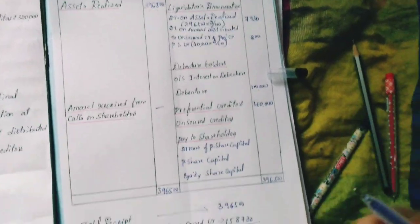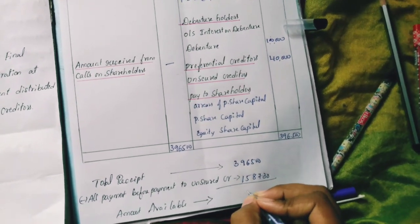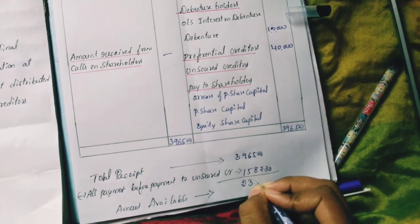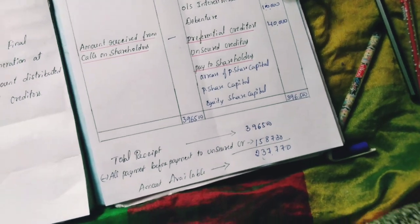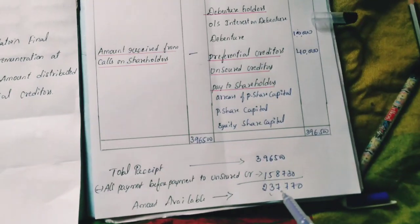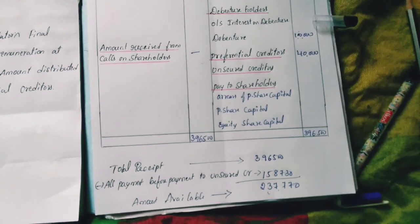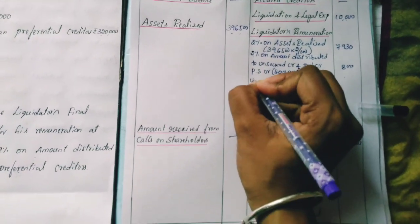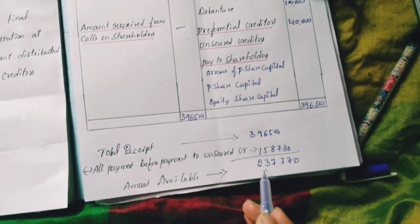The unsecured creditors' claim is Rs.3,20,000, but the available amount is only Rs.2,37,770. This is not sufficient to pay unsecured creditors in full. So unsecured creditors will receive a partial payment from the available balance.